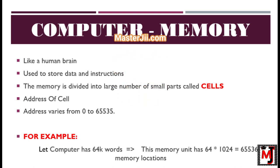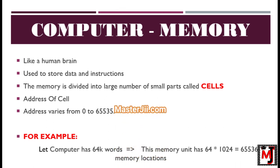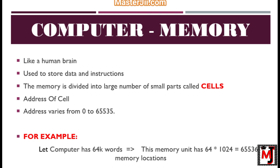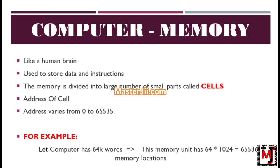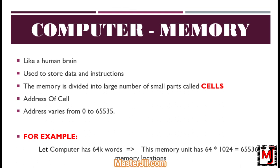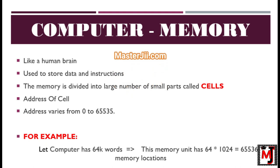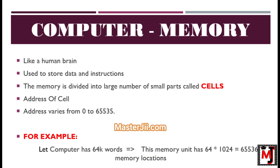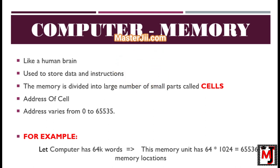Computer memory is the storage space in the computer where data is to be processed and instructions required for processing are stored. The memory is divided into a large number of small parts called cells. Each location or cell has a unique address which varies from 0 to memory size minus 1. For example, if the computer has 64K words, then this memory unit has 64 multiplied by 1024, equal to 65,536 memory locations. The address of these locations varies from 0 to 65,535.